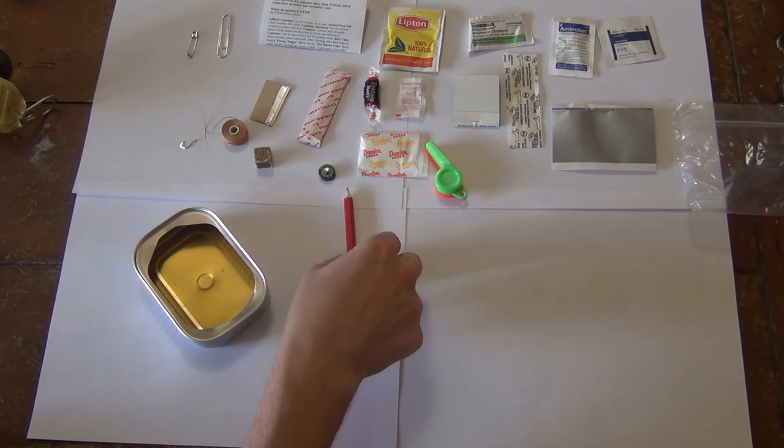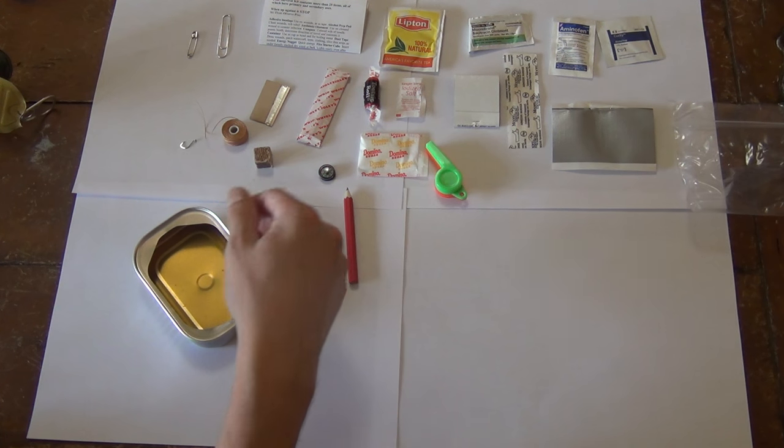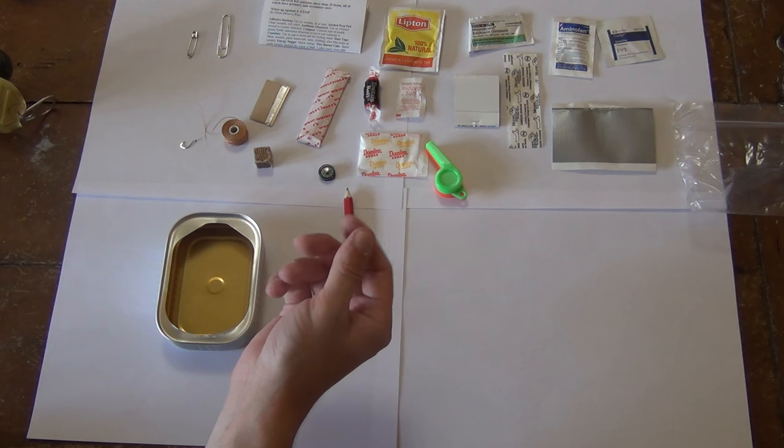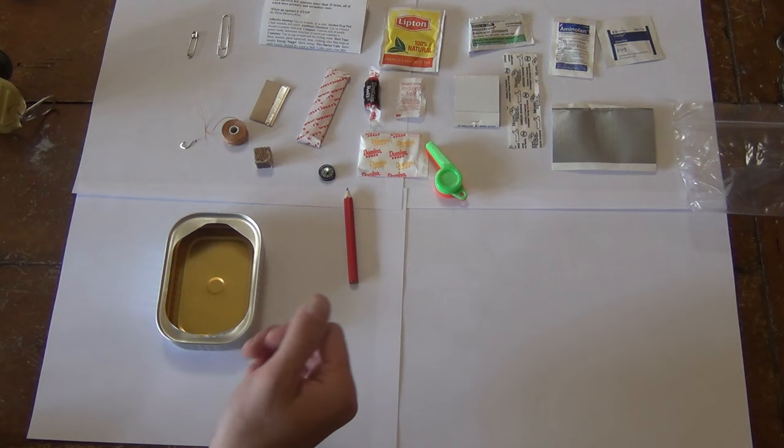I've had one of these kits before and it had some other items. It had some fishing line, a couple different items. More metal, like metal twine that you could use for making snares and such. This doesn't have that.